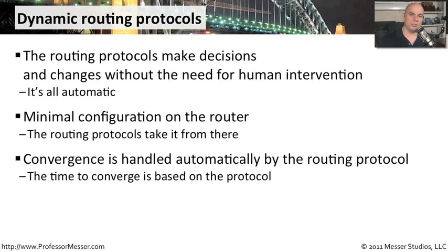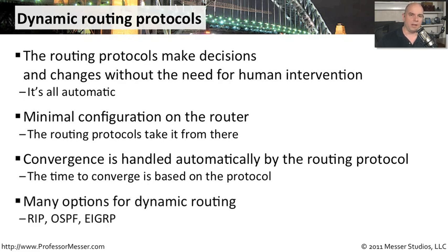The amount of time that occurs during this convergence process can vary depending on the routing protocols that you choose. Some routing protocols tend to converge very quickly, while others take a little bit more time. It differs from one routing protocol to another. There are a lot of different options if you want to use routing protocols. RIP, OSPF, and EIGRP are just a few examples — you give them a basic configuration, and they take care of all the routing decisions from there.